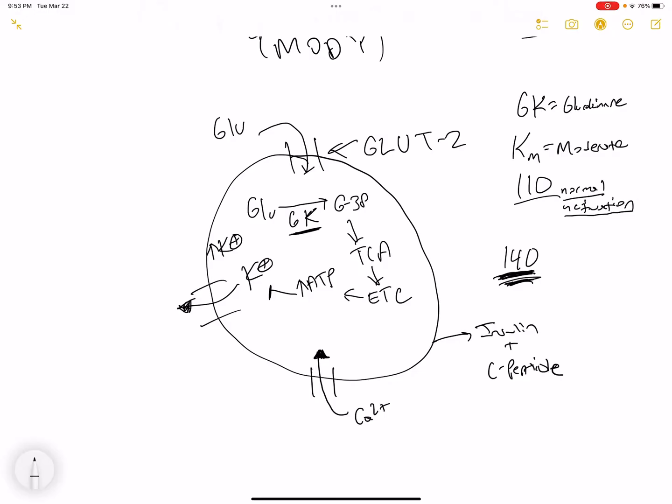So this enzyme glucokinase is really important for the release of insulin. And if we have a defect in glucokinase like a patient who would have MODY, then this can result in hyperglycemia because it is going to result in delayed activation of glucokinase and all these downstream effects are going to be delayed, and then we are going to have hyperglycemia.